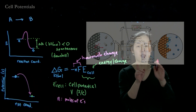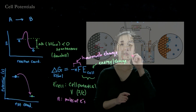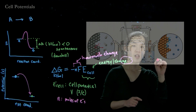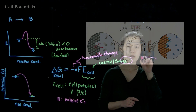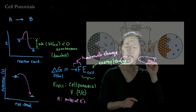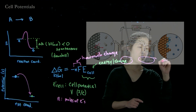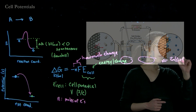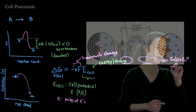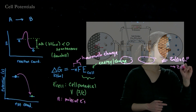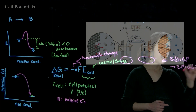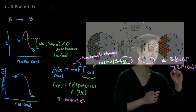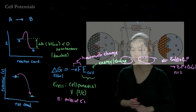Going back to this cell: zinc metal going to Zn²⁺, and Cu²⁺ going to copper metal. Our balanced reaction is: Zn(s) + Cu²⁺ → Zn²⁺ + Cu(s). Here we're passing two electrons per mole of reaction, so n equals 2.